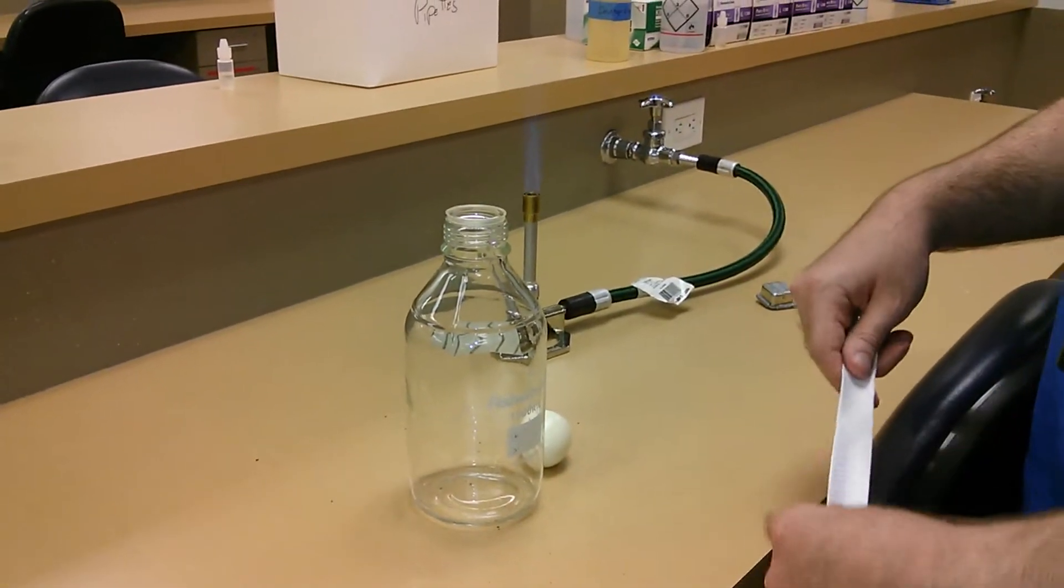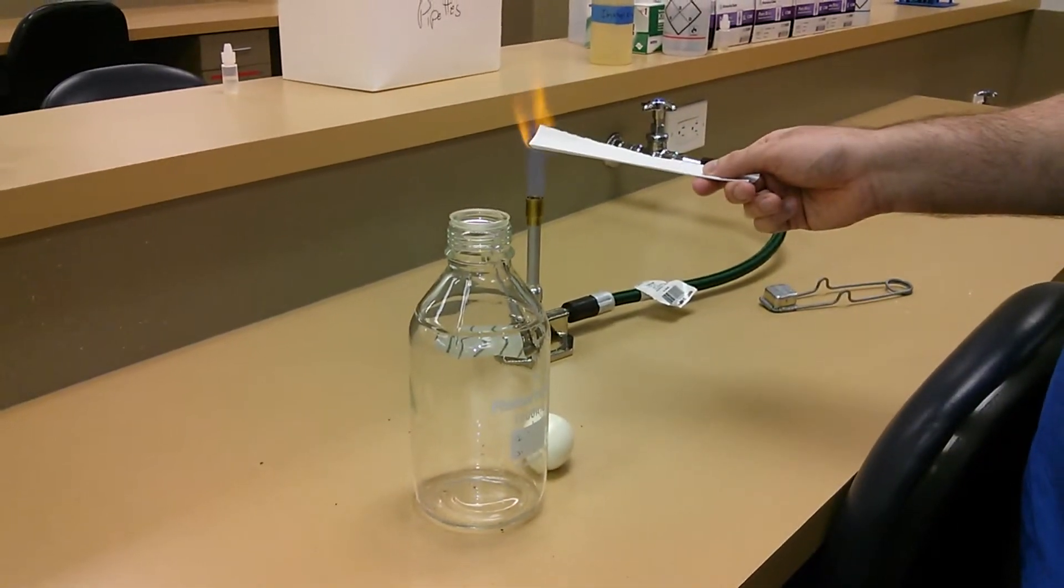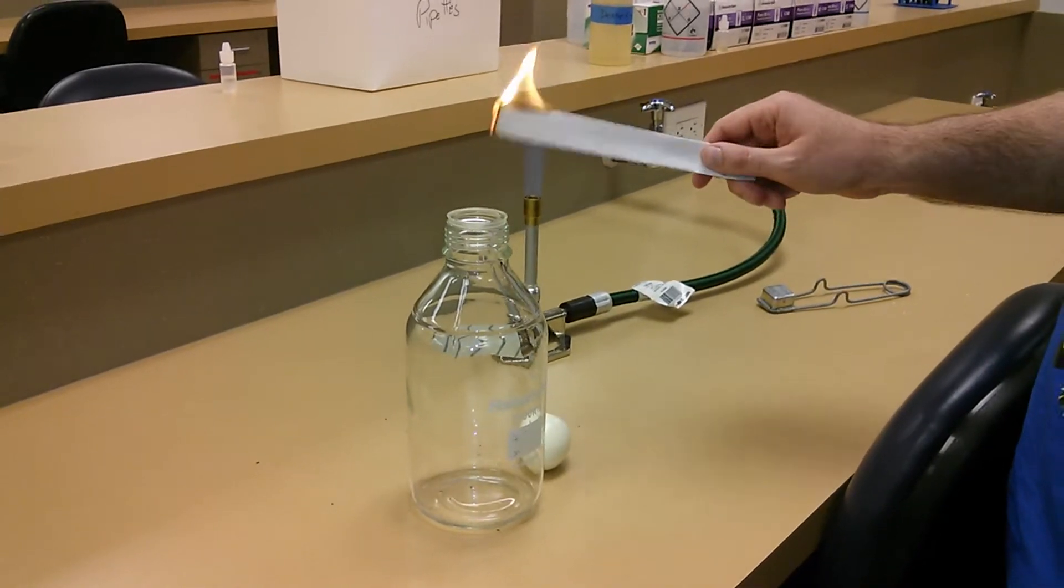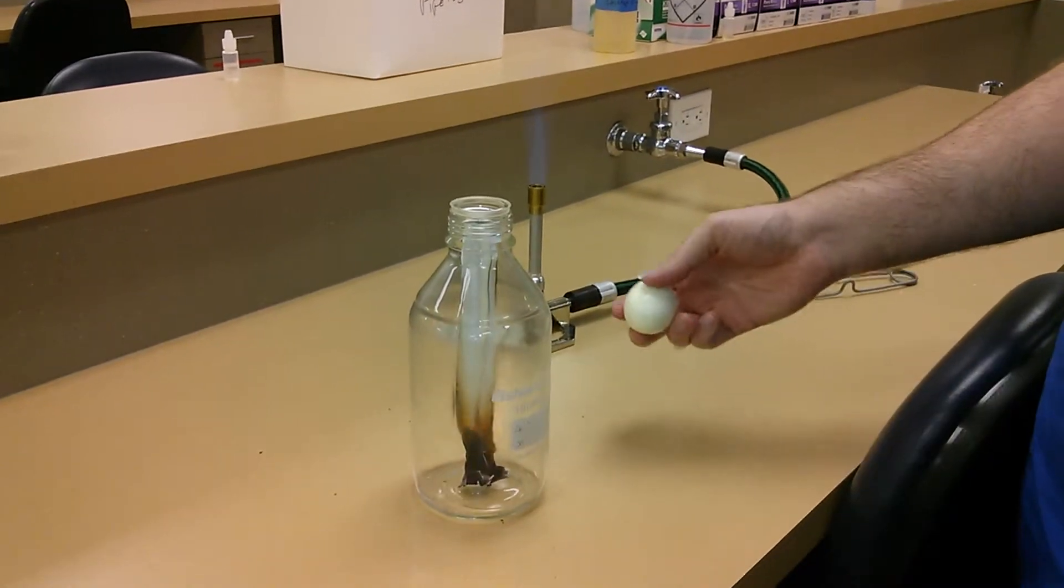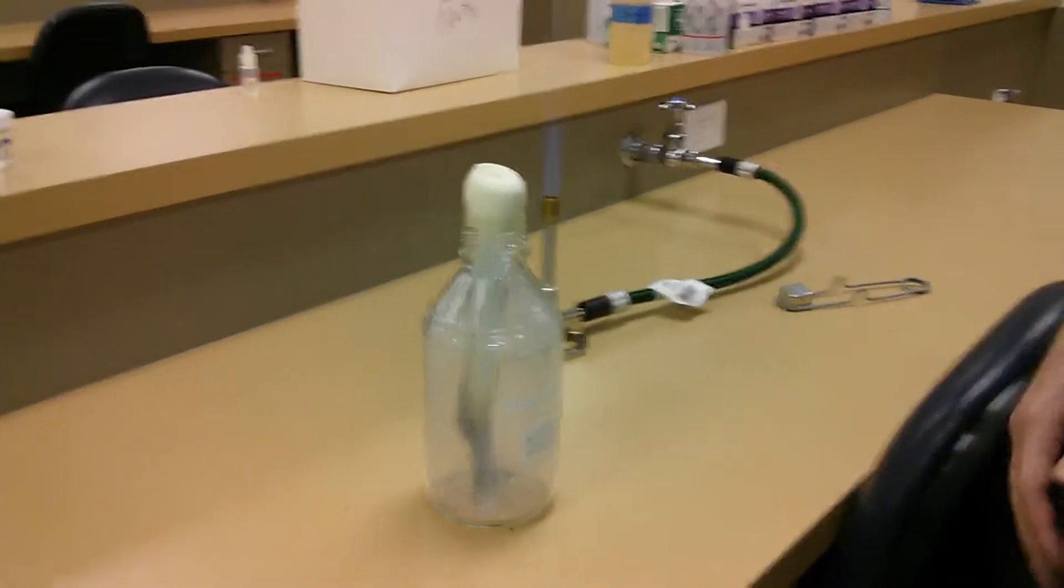First thing you do: light the paper, make sure it catches fire, insert the flaming paper into the bottle, wait till it smokes up a little bit, then place your egg on top.